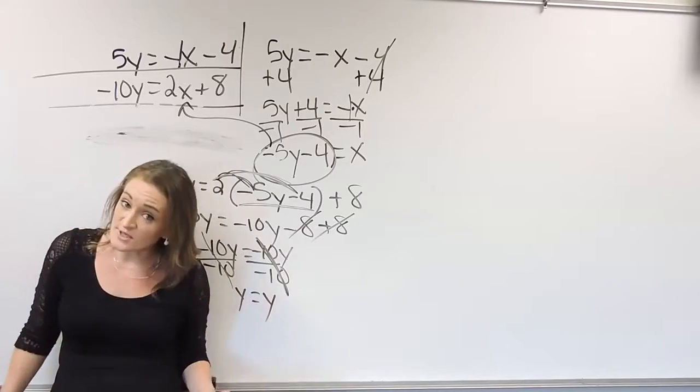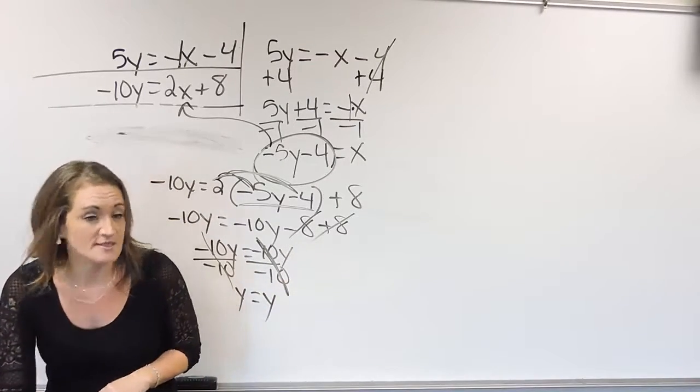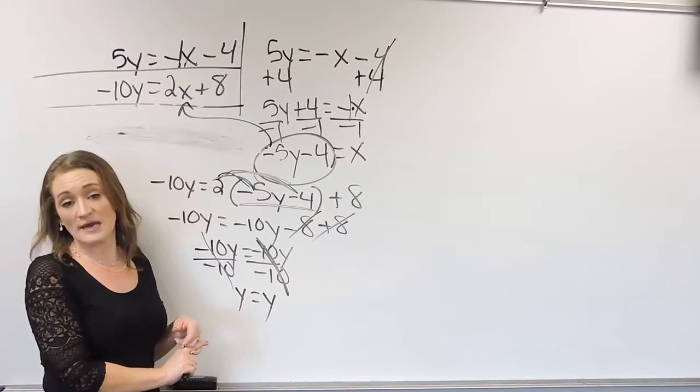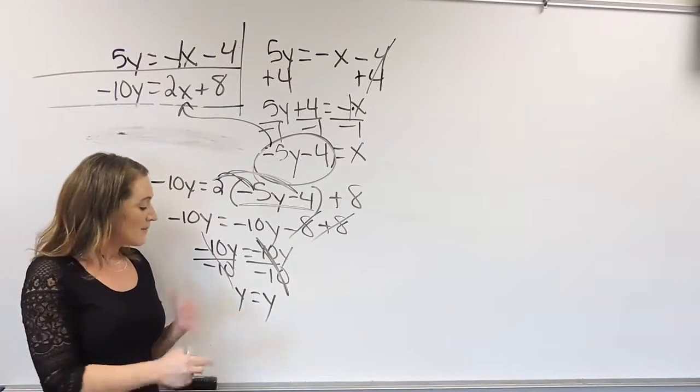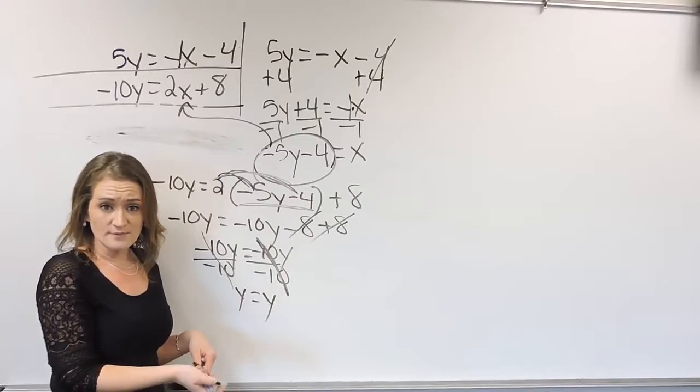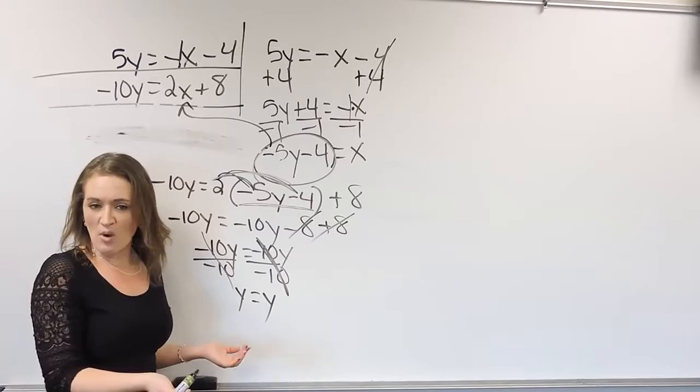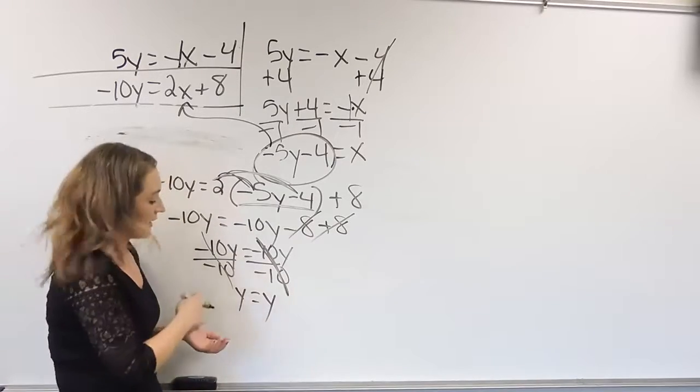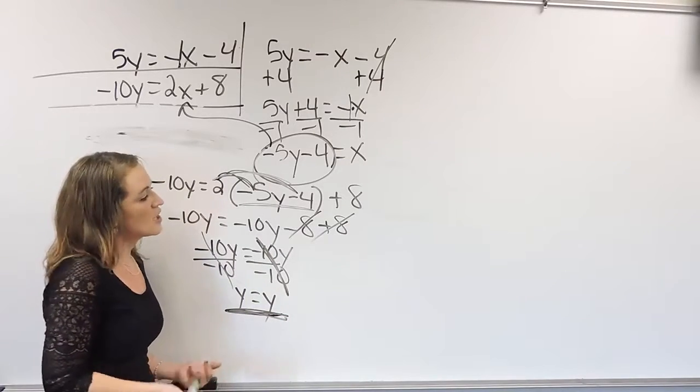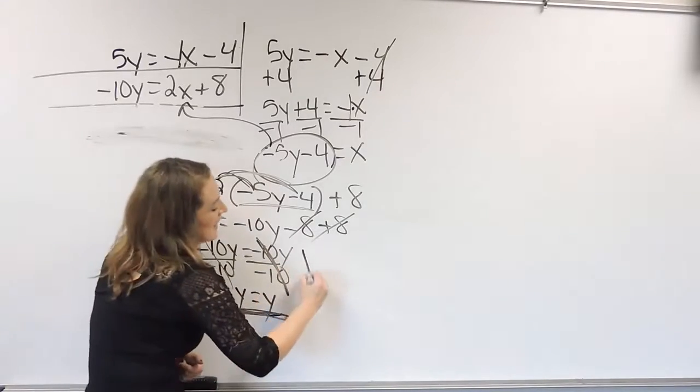So this is one of the special cases, no solution or infinitely many solutions. But take a look at your answer. Does y equal y? Now, y does equal y. It may look a little bit funny, right? But y is equal to y. That is true. It makes sense. So when you're left with something like this, this is actually called infinitely many solutions,